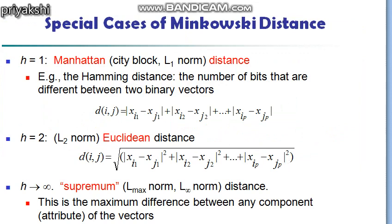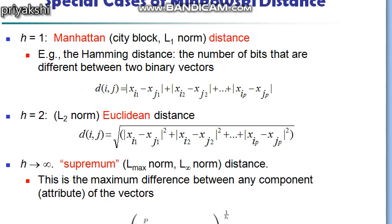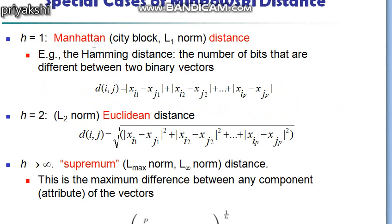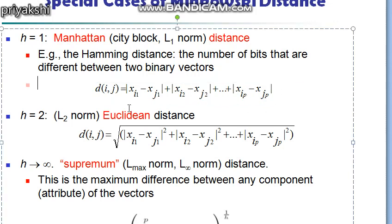These are special cases of the Minkowski distance. If we put h equal to 1, we simply take the absolute difference of the attribute values and sum them up — this is known as the L1 norm, or Manhattan distance, or city block distance. This is a popular example related to Hamming distance, where we count the number of bits that differ between two binary vectors.